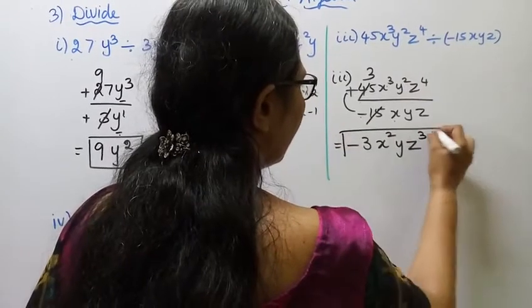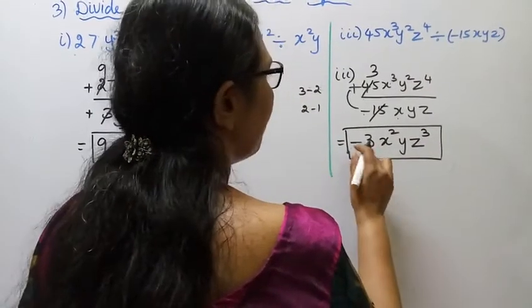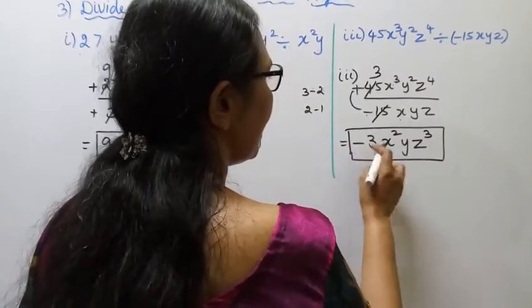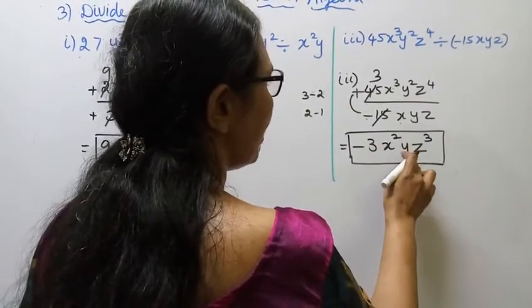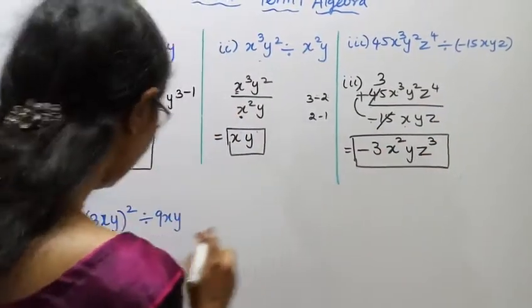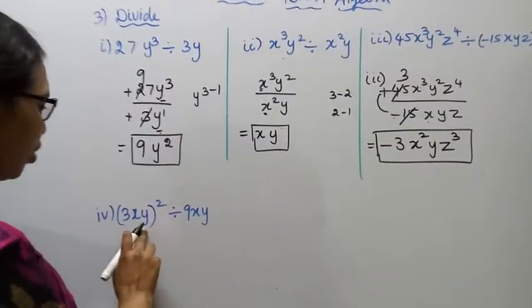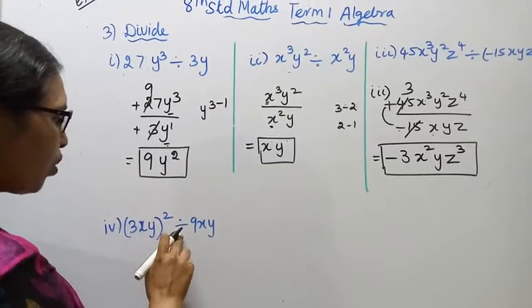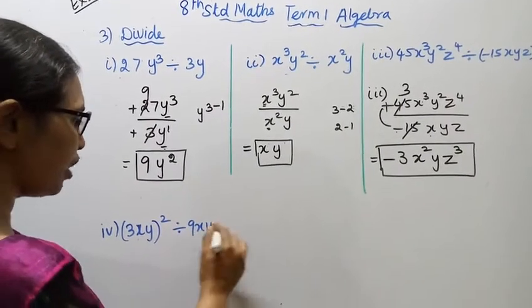The answer is minus 3, x square, y, z power 3. Fourth problem: 4 times 3xy all square divided by 9xy.